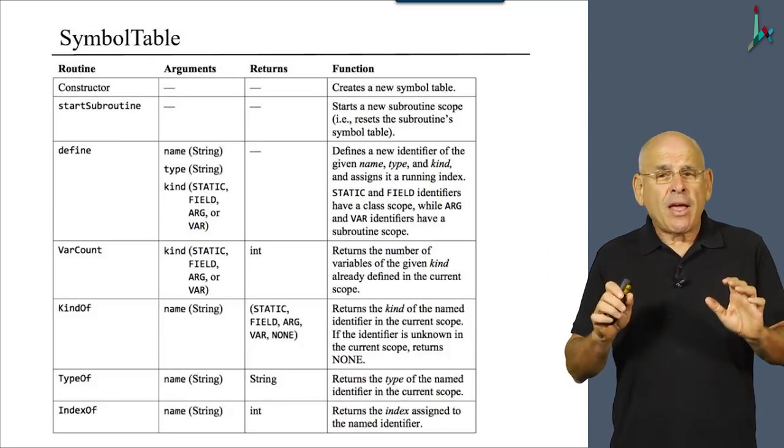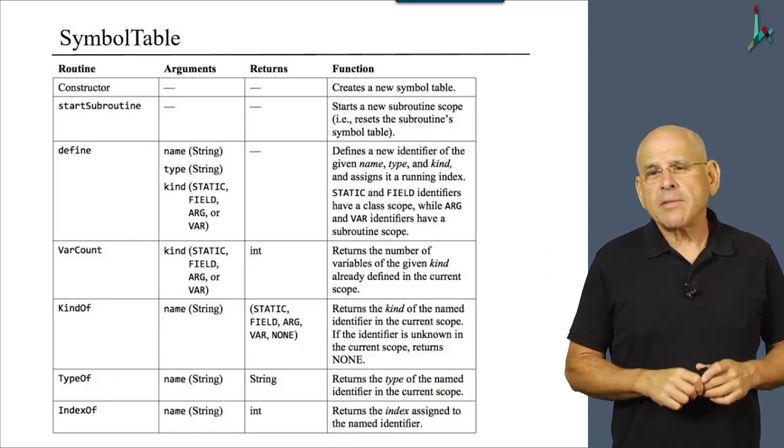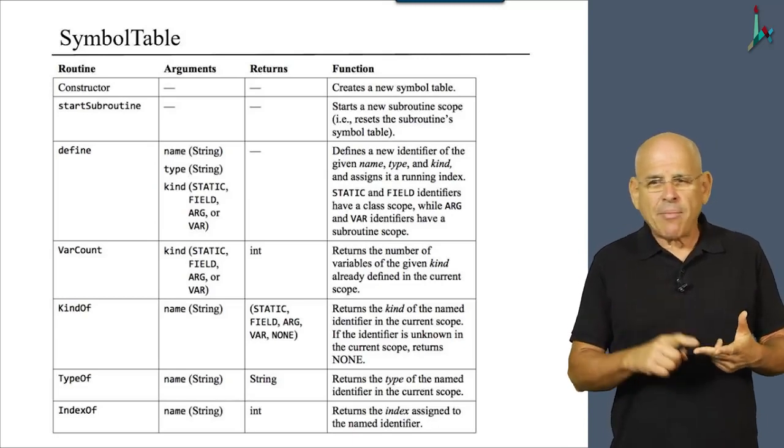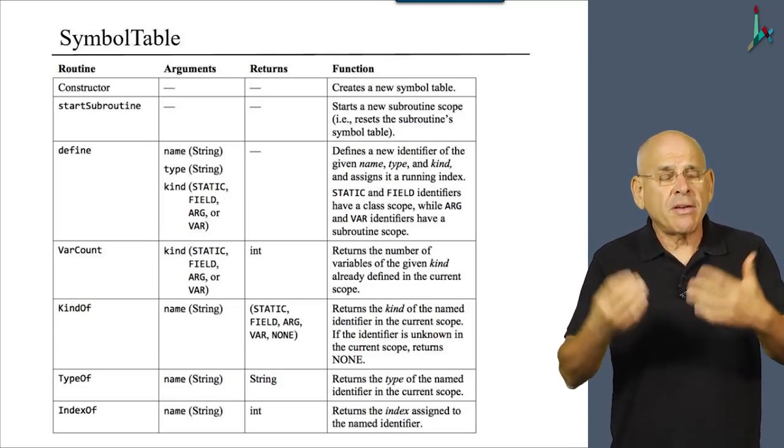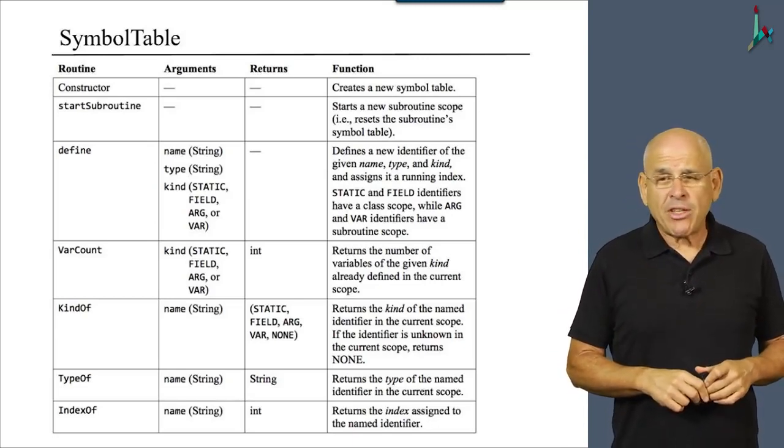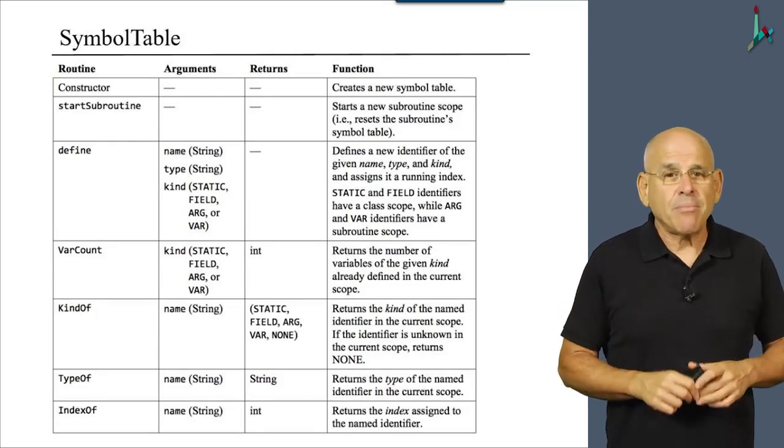And then we have three queries, if you will, with the names, kind of, type of, and index of, which return some useful information about a certain symbol.